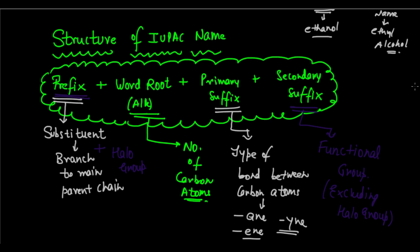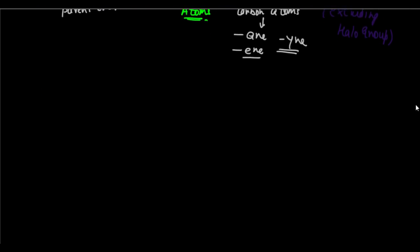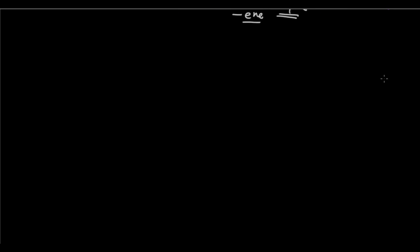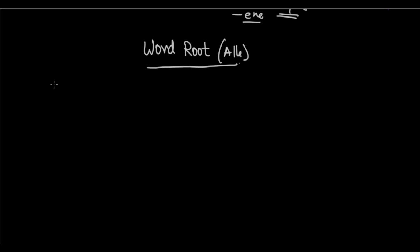Before we go into the naming process, let's look at the particular word roots for particular carbon atoms. The word root, also called 'ALK', gives us an idea about the number of carbon atoms in the compound. So let's draw a table — number of carbon atoms, and then the word root to be used.